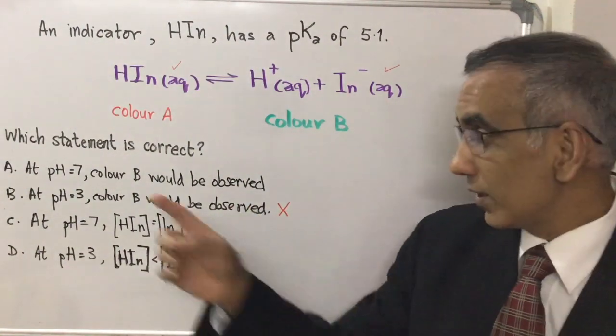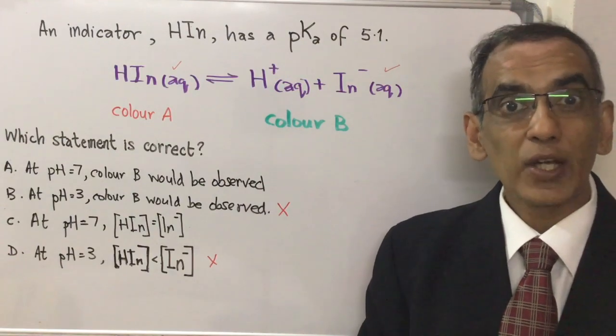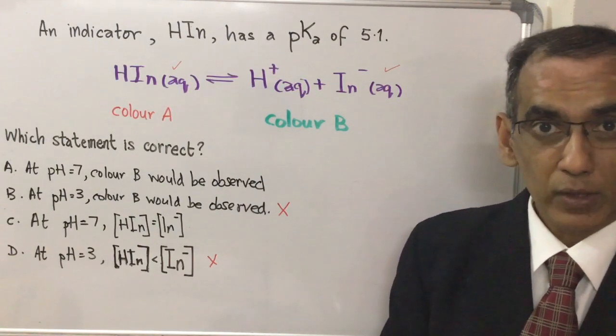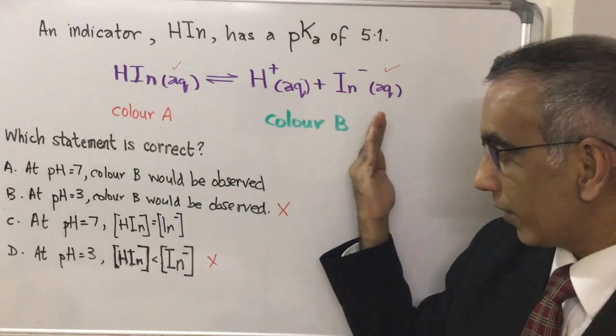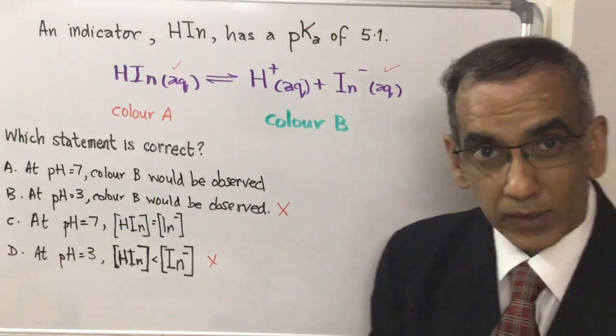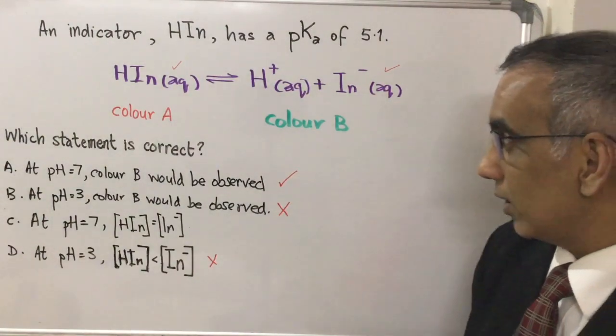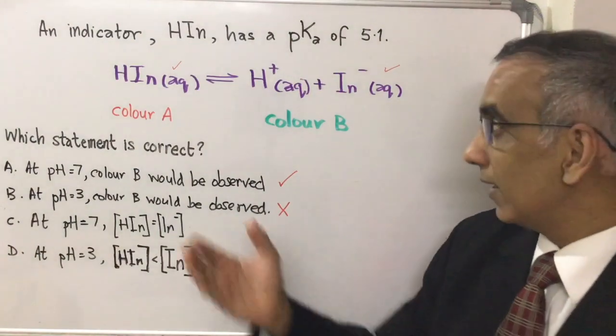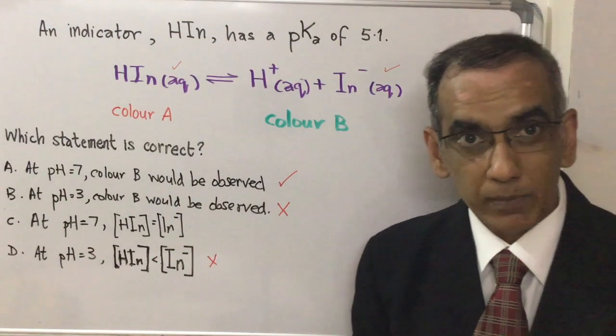Now you're left with the two choices that say pH 7. At pH 7 you have a much higher concentration of OH- and a much lower concentration of H+. So the equilibrium is going to be a little bit more in this direction. So at pH 7 color B could be observed. We could check that as a possible choice because it makes sense that you could have a pH of 7 and the equilibrium would then be shifted in this direction and you would end up with color B.